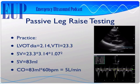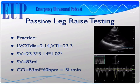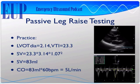We're going to do it right in front of you so you know how easy it is. LVOT diameter is 2.14 and VTI is 23.3. Stroke volume equals VTI (23.3) times pi (3.14) times one-half of that diameter squared (1.07 squared). So: 23.3 times 3.14 times 1.07 squared gives 83 milliliters. My stroke volume is 83 milliliters — every time the heart beats it's kicking out 83 milliliters. Multiply that by 60 beats per minute and it's about 5 liters per minute. The cardiac output in this patient is 5 liters per minute.